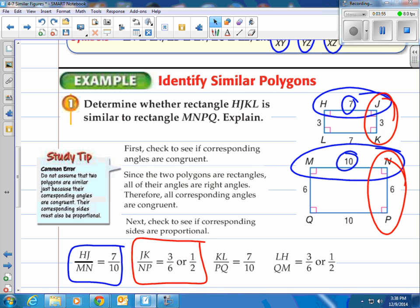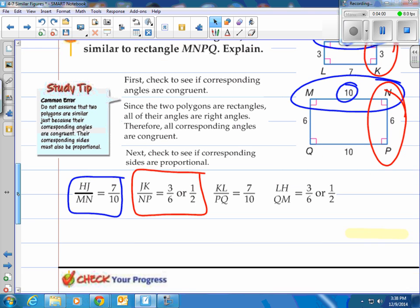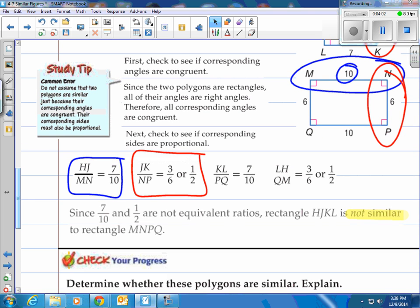You can see 7 tenths and 1 half, those aren't the same ratios. So therefore, we can stop right there, and I can say since 7 tenths and 1 half are not equivalent ratios, rectangle HJKL is not similar to rectangle MNPQ.